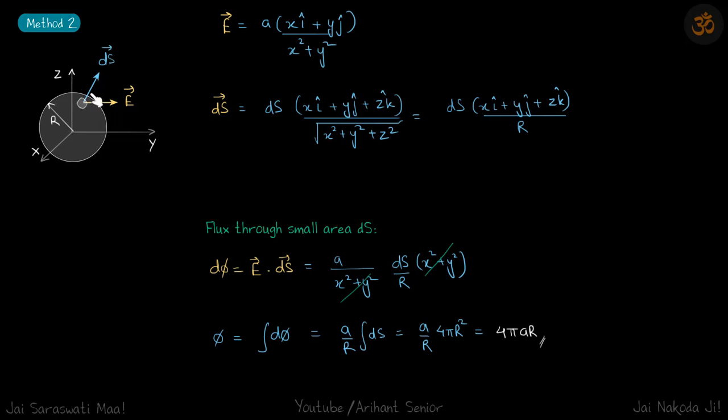The ds vector, the area vector on the sphere, will be the magnitude times the unit vector along r. That will be x i cap plus y j cap plus z k cap divided by root of this. Root of x square plus y square plus z square on any point on this sphere is r, so this simplifies and becomes this.